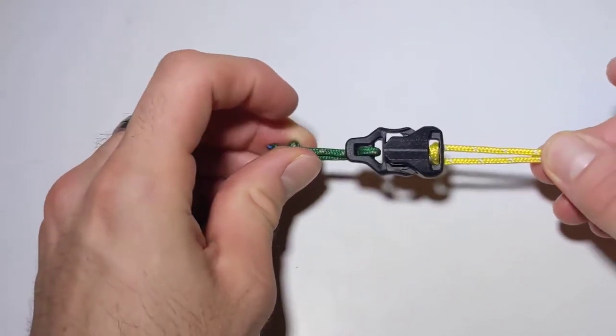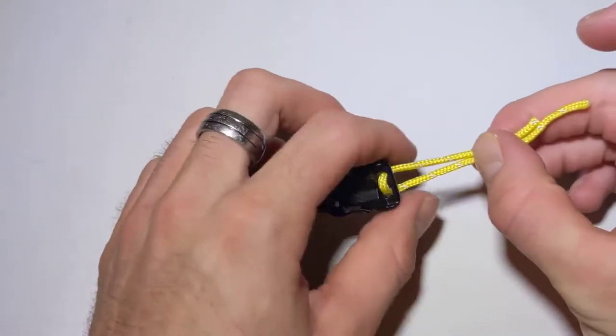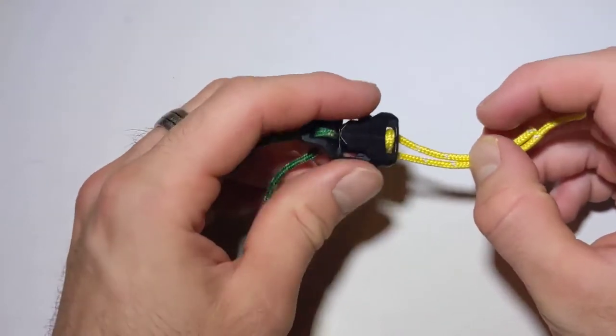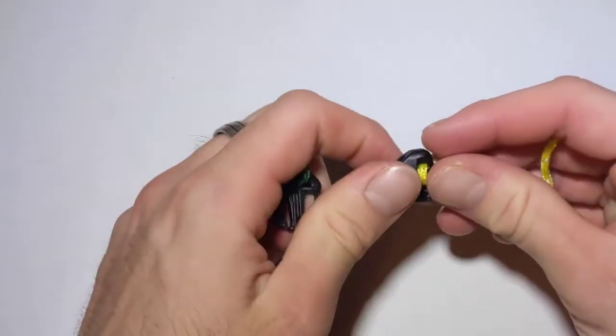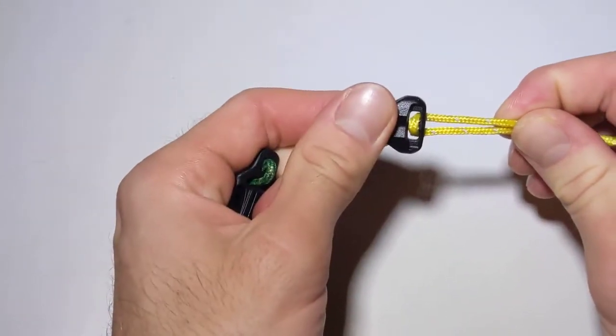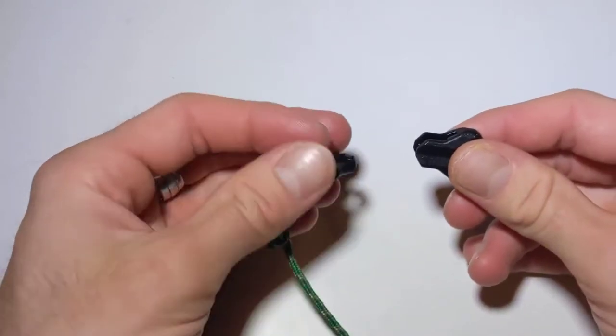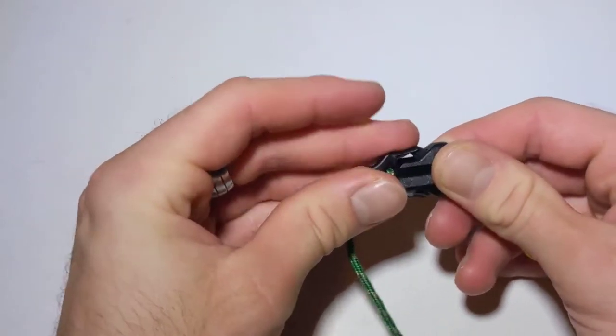You could also use this as a stern strap. Attach this guy into the looping around the shoulder strap and then do the same on this side.